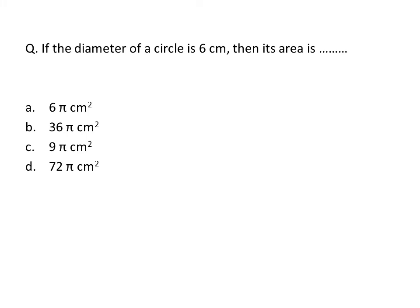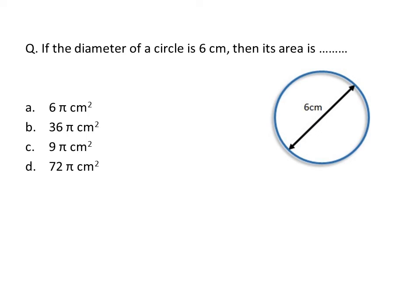Next question: if the diameter of a circle is 6 centimeters, then its area is? We have diameter = 6 centimeters. The area formula uses radius, so we need to find the radius first. The relation is: diameter = 2 × radius, so radius = diameter ÷ 2 = 6 ÷ 2 = 3 centimeters. Now applying the area formula: A = π r² = π × 3² = π × 9 = 9π. Option C is correct.